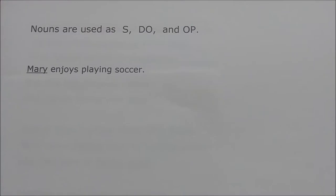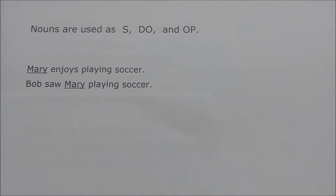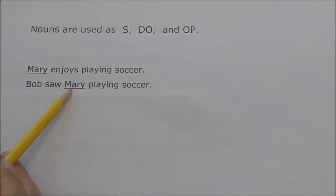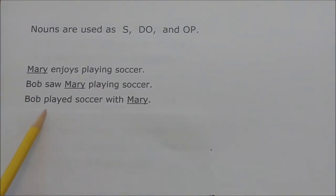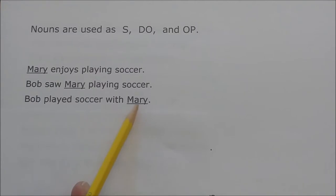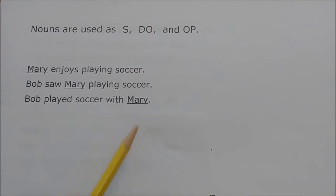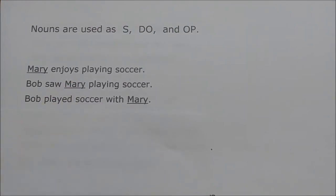In 'Mary enjoys playing soccer,' Mary is a person and a noun acting as the subject. In 'Bob saw Mary playing soccer,' Mary is no longer the subject — Bob is — and Mary has become the direct object. In 'Bob played soccer with Mary,' Mary is the object of the preposition 'with.' With Mary is a prepositional phrase. So here's Mary as a noun in three different functions: subject, direct object, and object of the preposition.